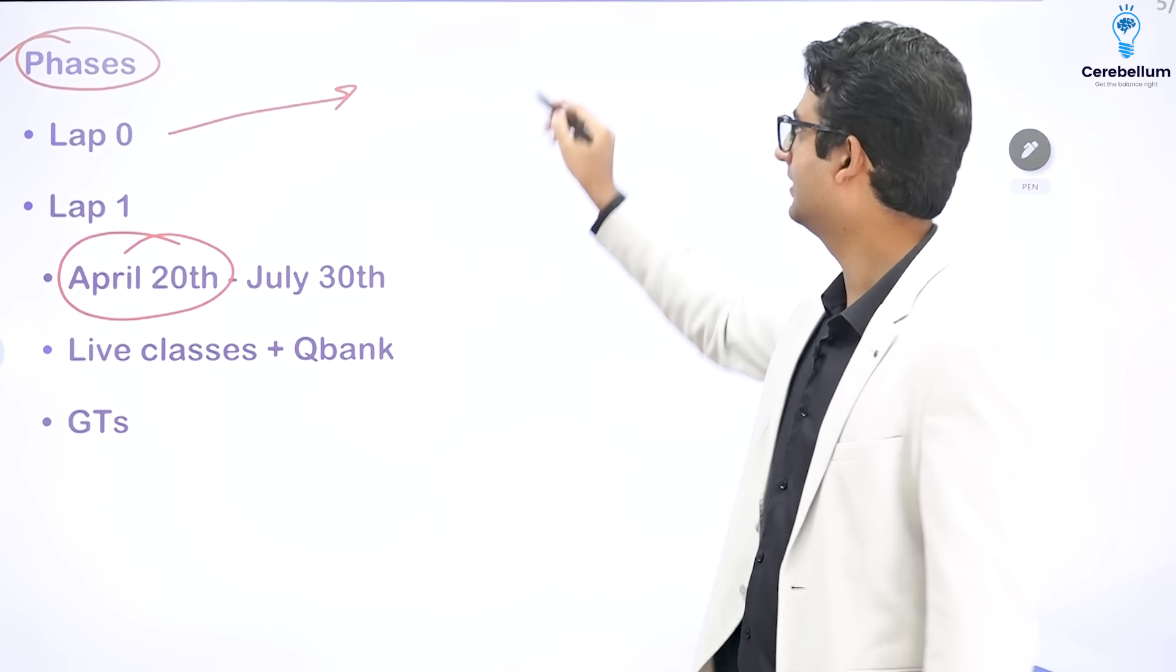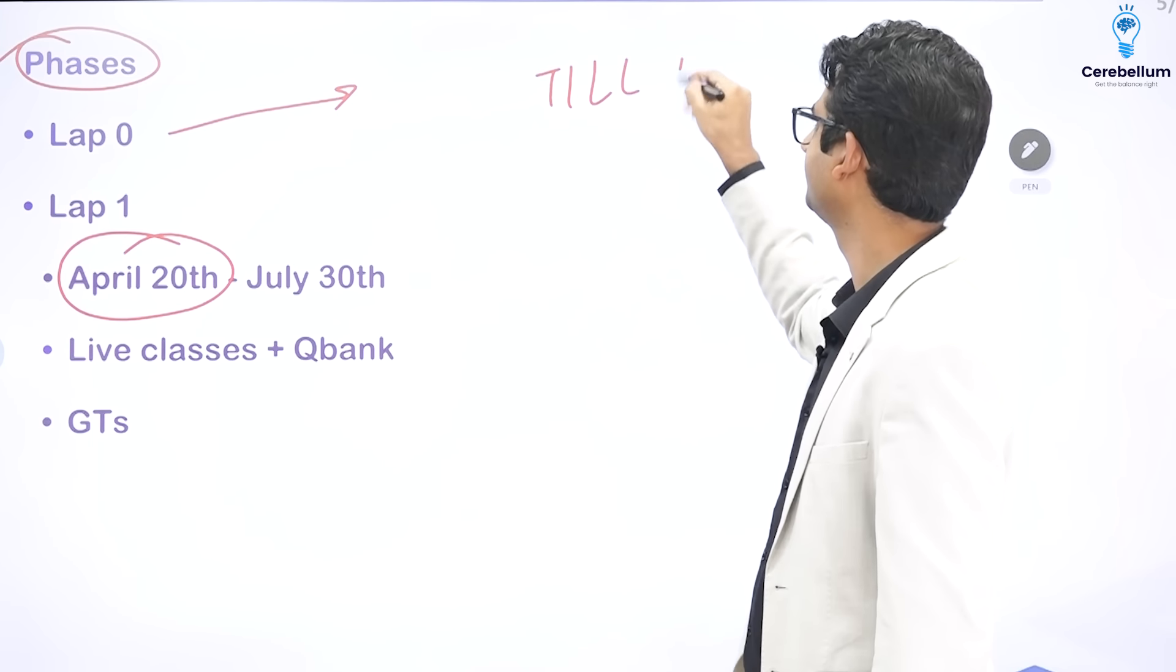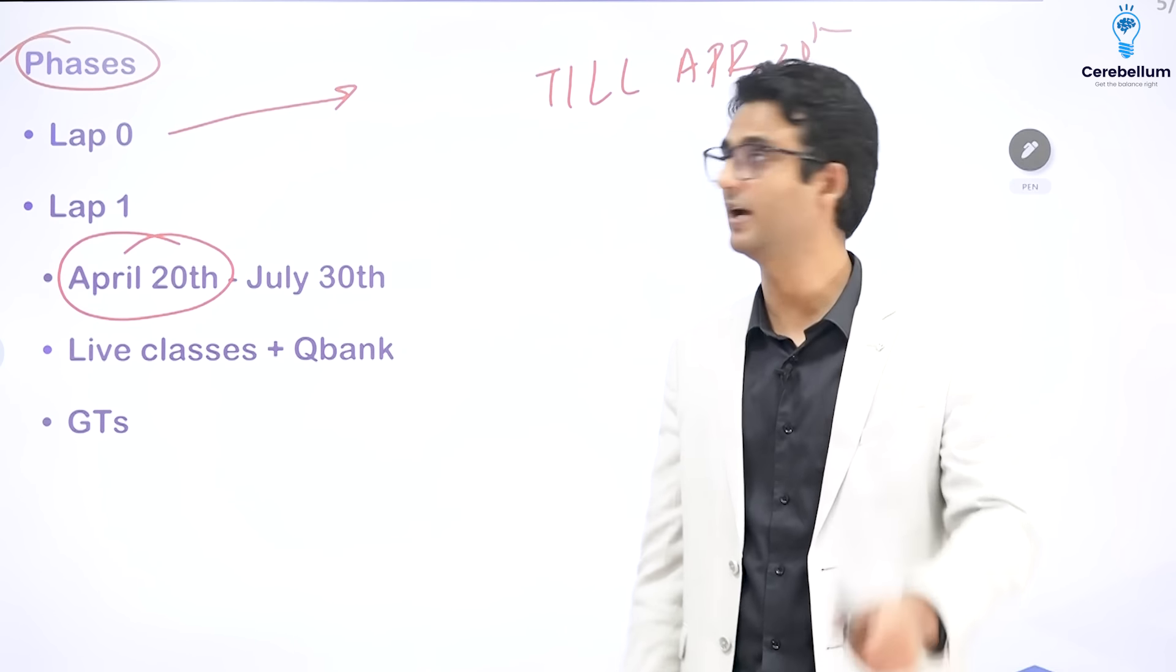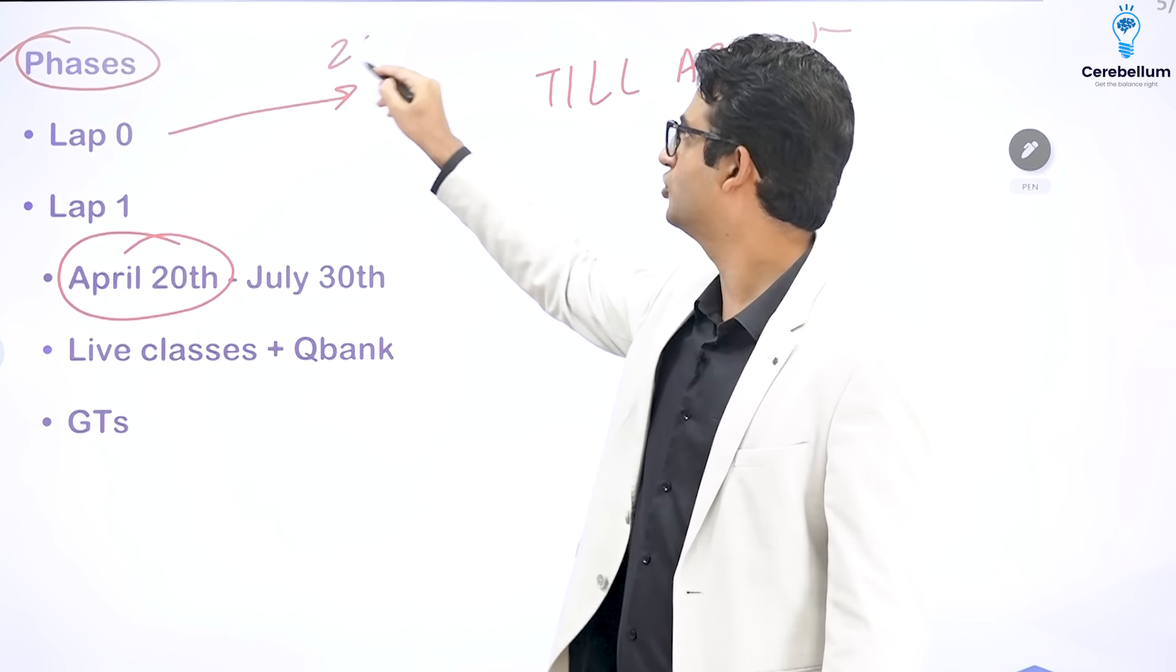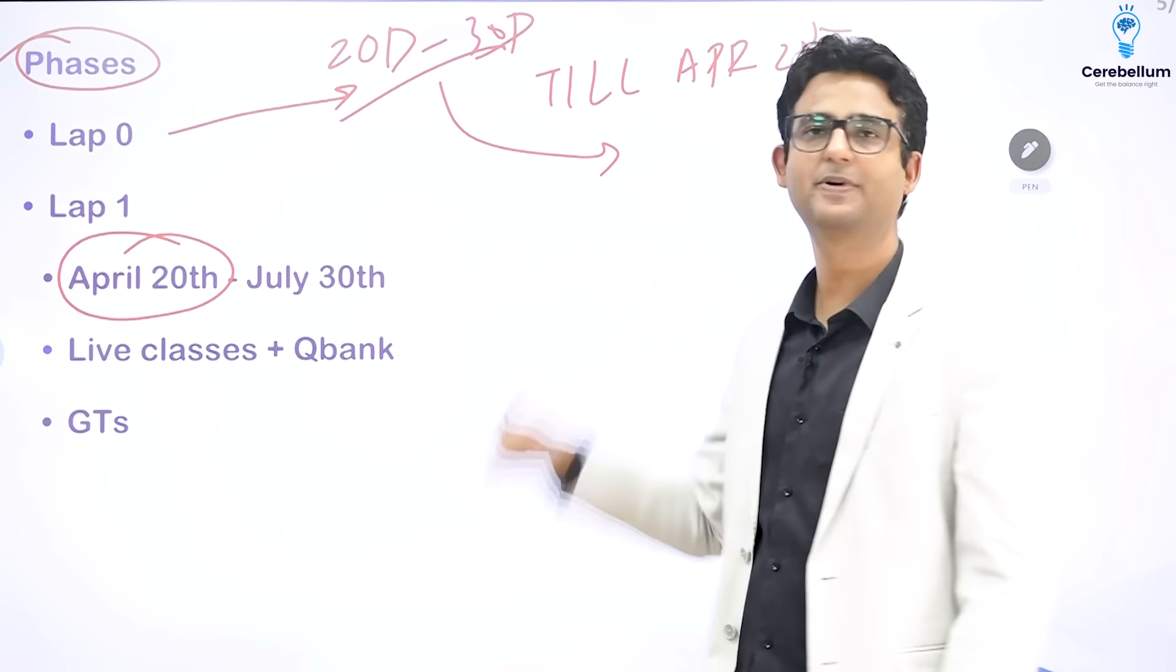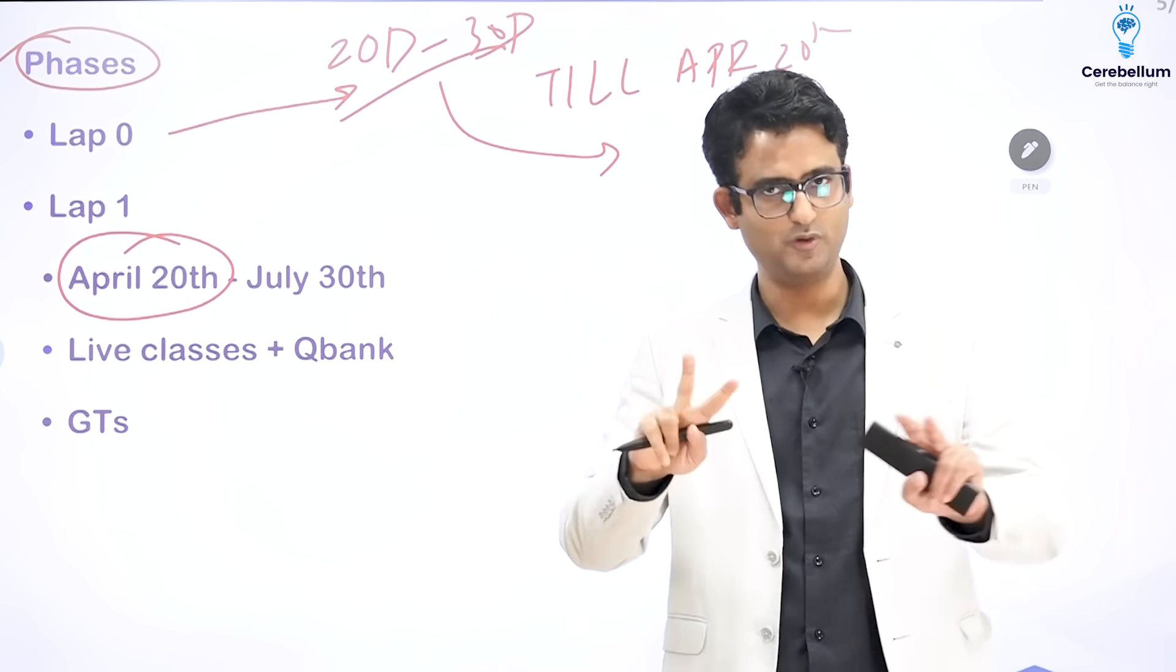From today till April 20th. You have got say 25 days, 30 days, 20 days depending upon when you start. So we want that you use those 20 days to 30 days also properly. How can you do that? There are 2 ways.